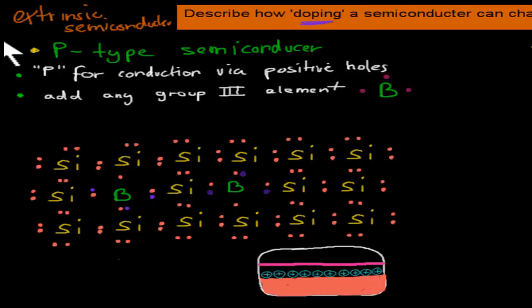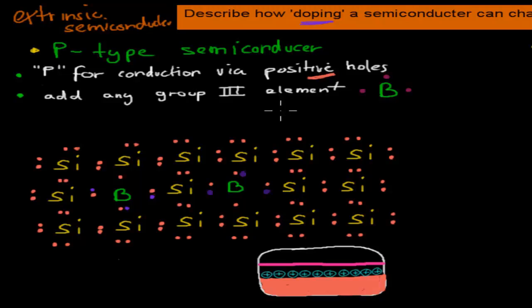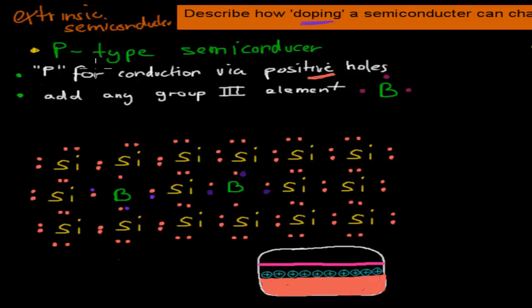For the p-type, the 'p' stands for conduction via positive holes. A p-type semiconductor will have extra conduction potential because it is going to have a few more extra positive holes. The reason why is because we add any group 3 element into the actual structure — an example would be boron.